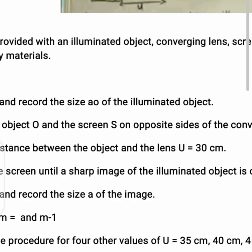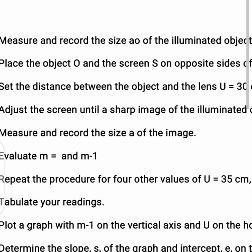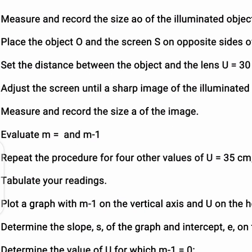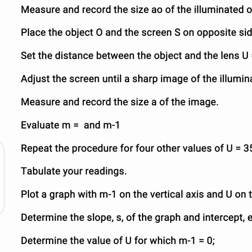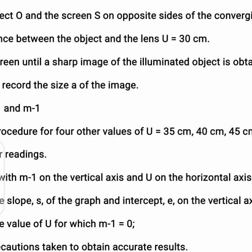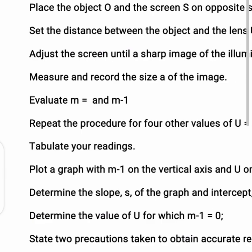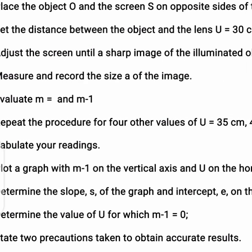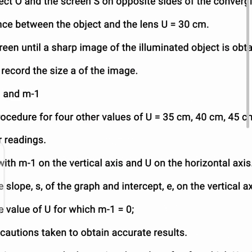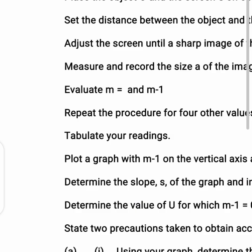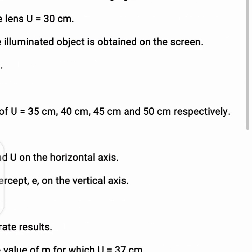Find the value of m and m⁻¹ in each case and tabulate your readings. Plot your graph with m⁻¹ (m raised to power minus one) on the vertical axis and u on the horizontal axis. Determine the slope S of the graph and the intercept E on the vertical axis. From your graph, determine the value of u for which m⁻¹ is zero. Then state your precautions.